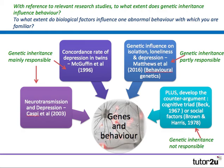Caspi's argument about neurotransmission and depression is that genetic inheritance is mainly responsible. Genetic inheritance affecting neurotransmitters is a biological factor, so you're covering both genetic inheritance and biological factors. McGuffin et al. support this argument by looking at the concordance rate of depression in twins. Caspi et al. 2003 is the later example of Caspi's research. Matthews et al. bring it right up to date, saying genetic inheritance is partly responsible — a behavioural genetic approach.